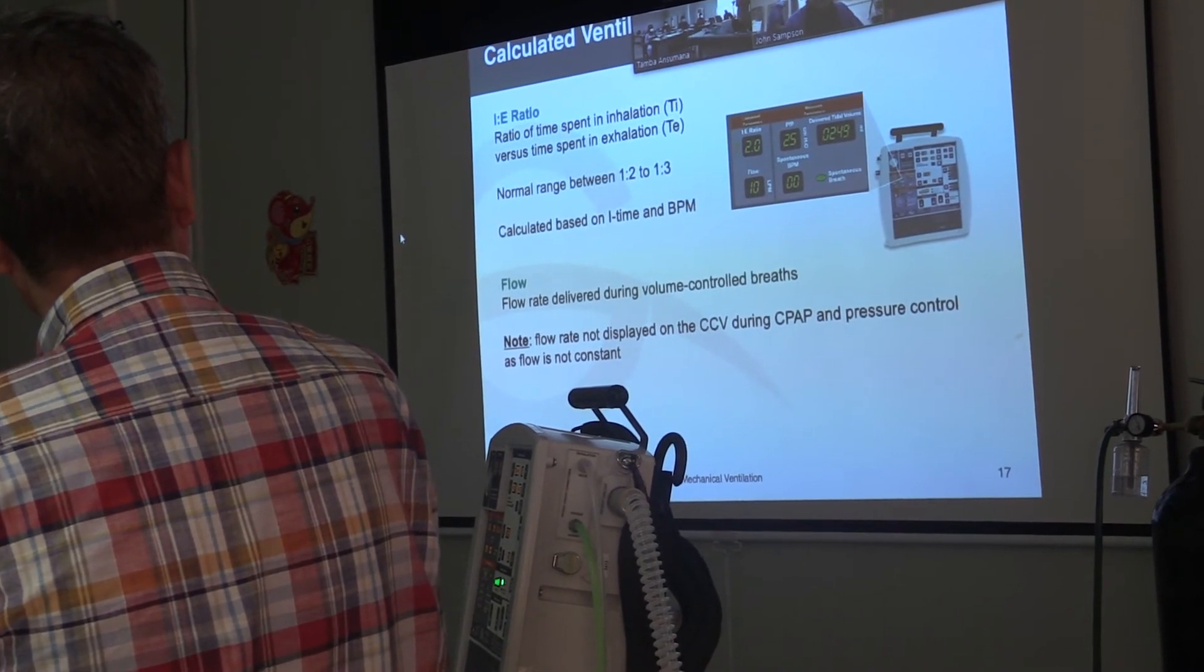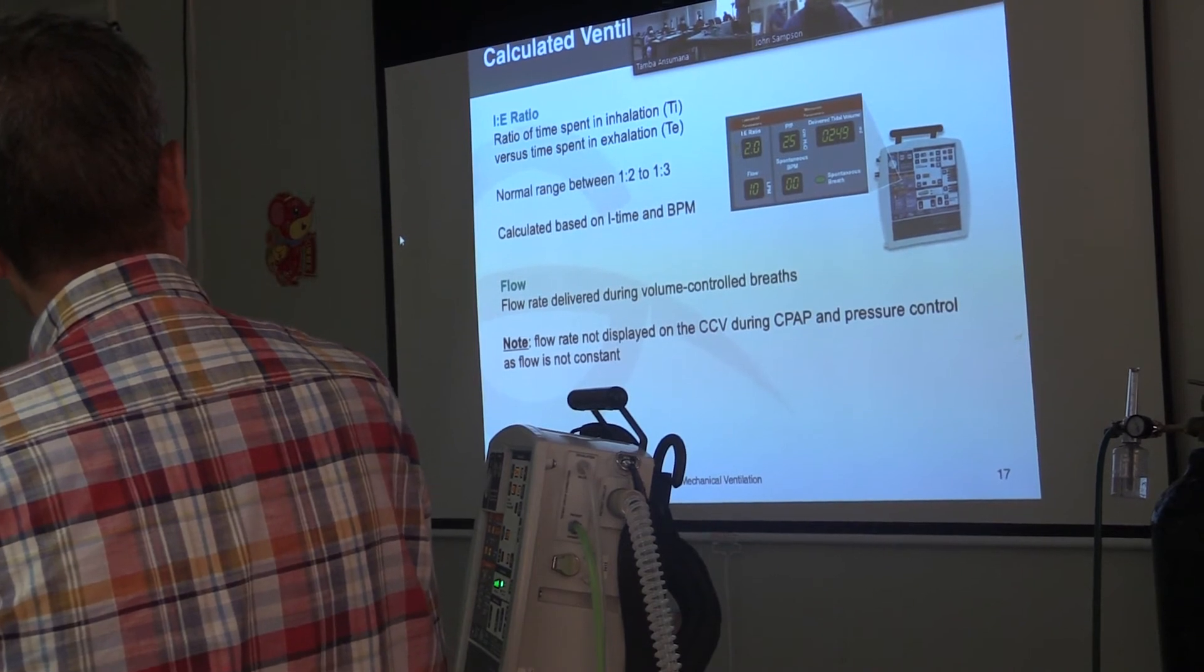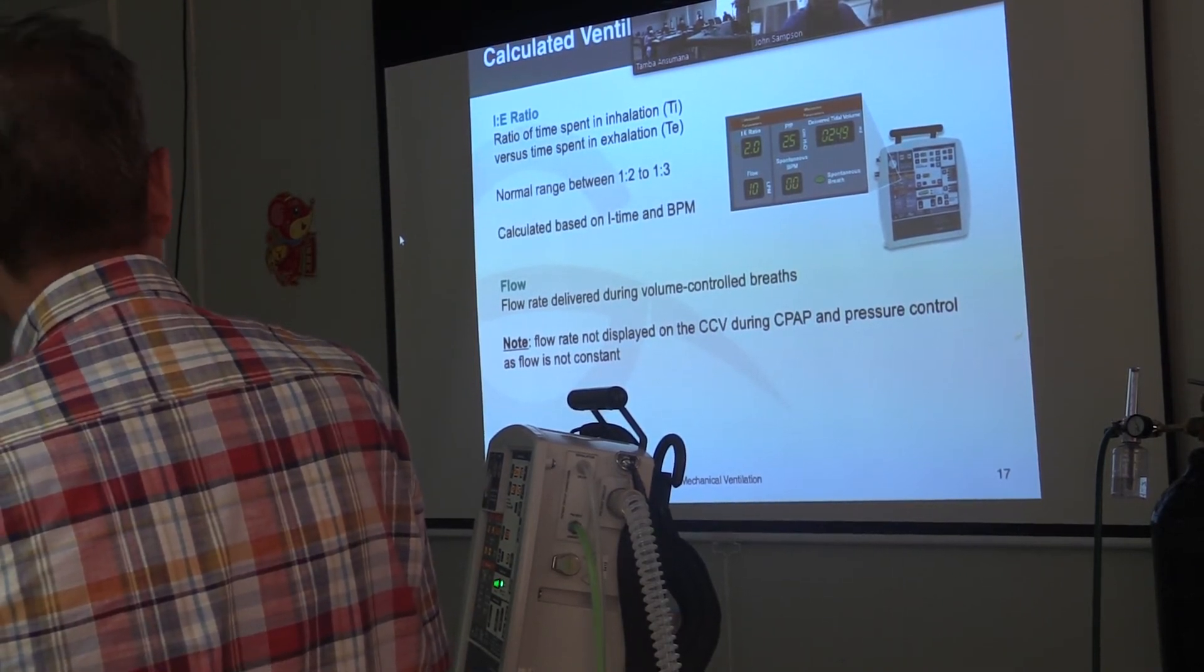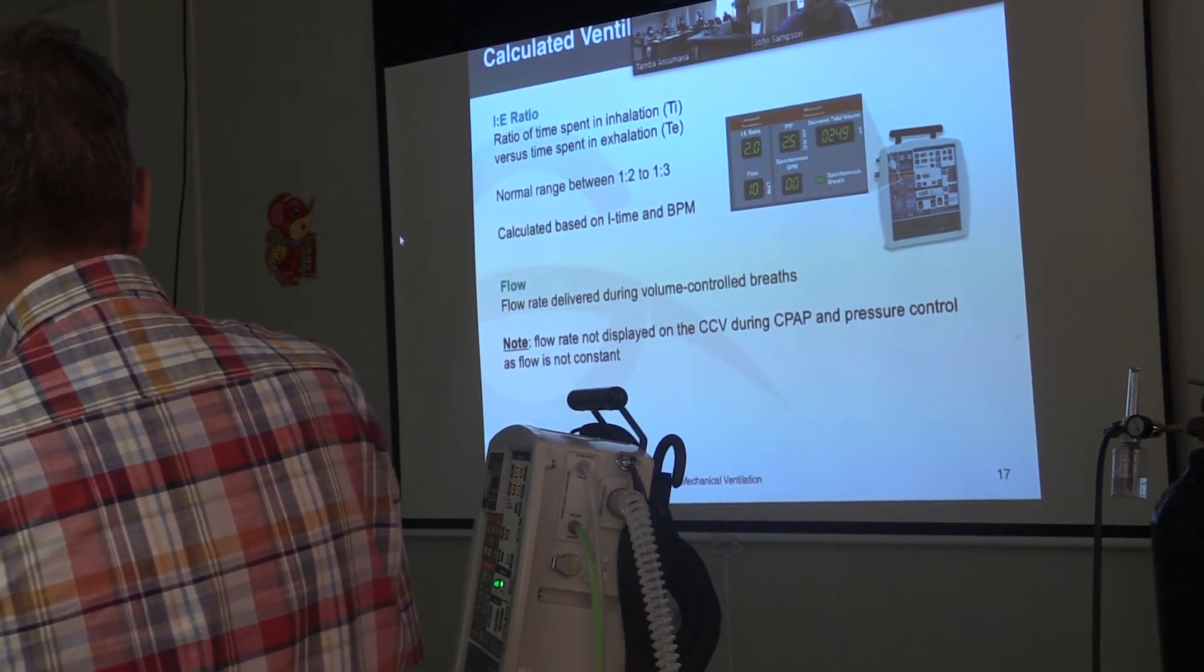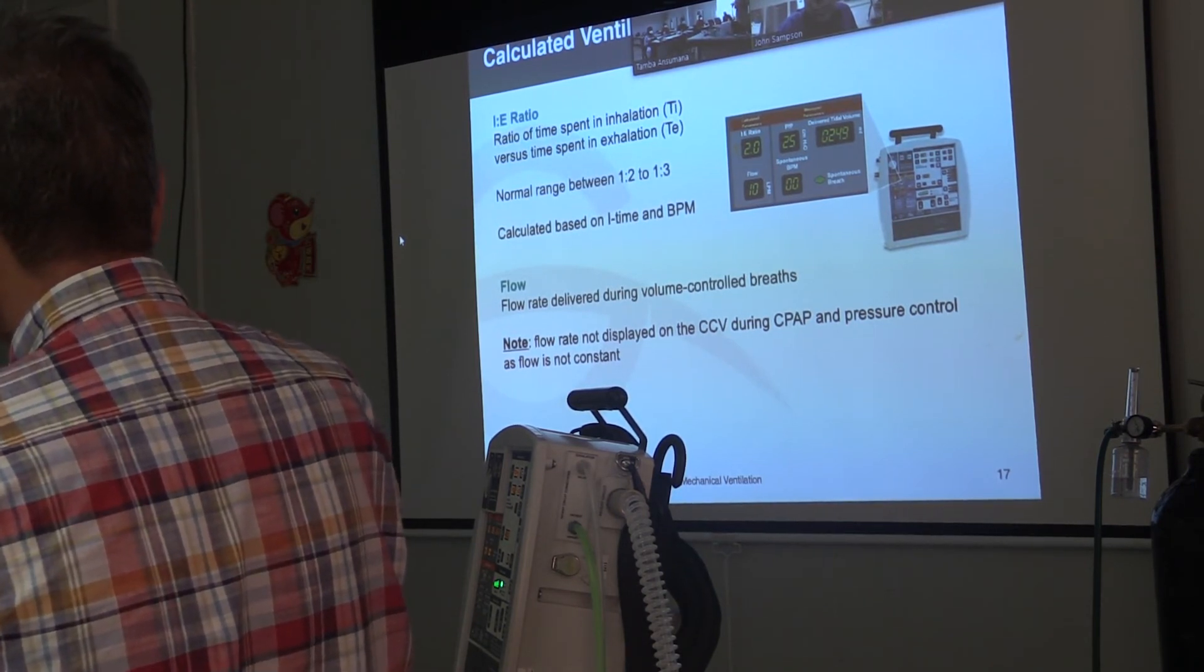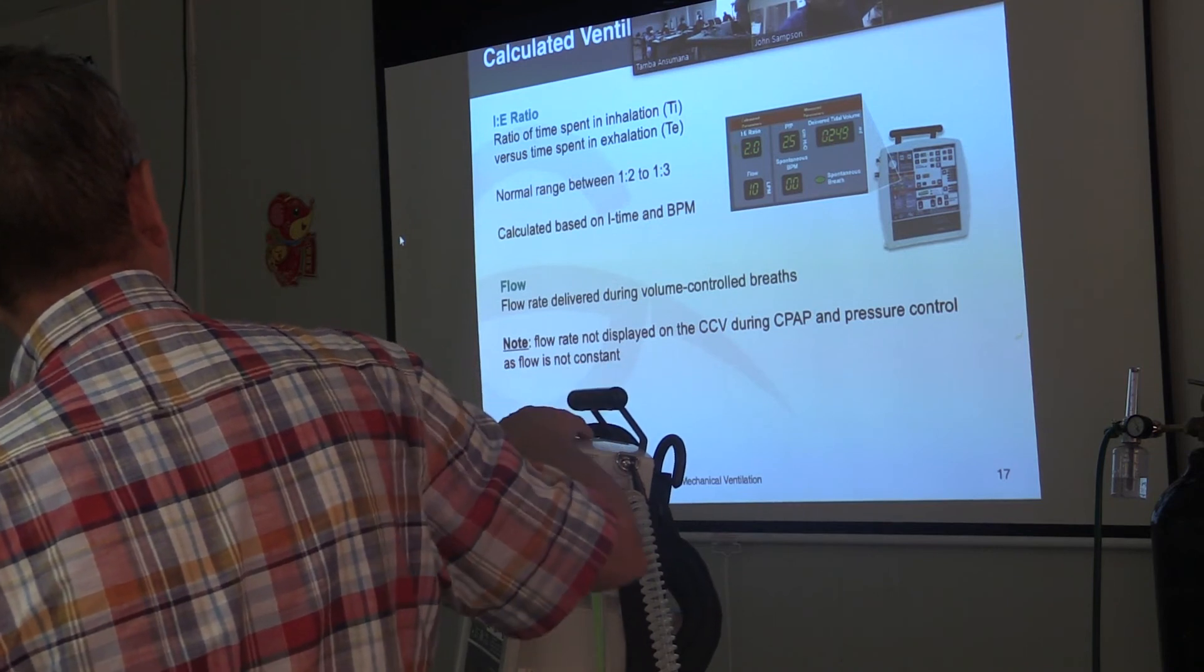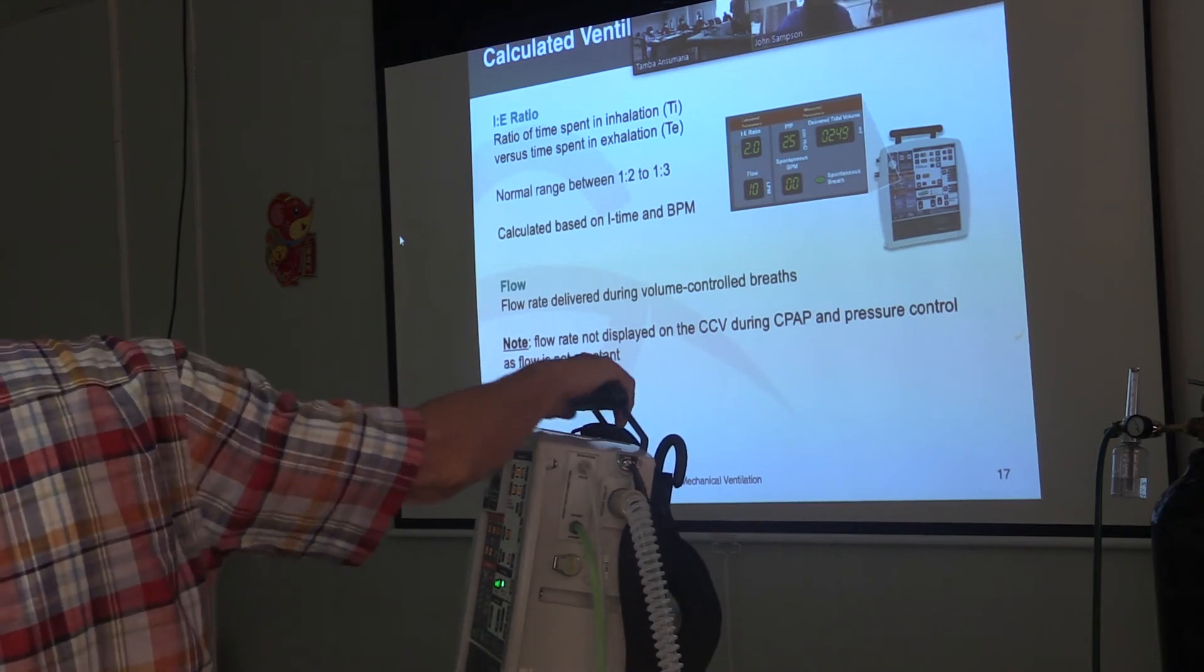Do you want to go in a little bit more about the I time and BPM, how they link to the IE ratio? I can show it on the machine. Sure. How to set the IE ratio, basically. Or is that coming later?